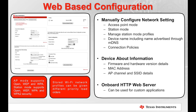From the Devices tab, you can easily access the onboard HTTP web server. This will enable access to configure the network settings, and you have many options available to set things up exactly how you desire. You can also find out device details such as firmware and hardware versions, MAC address, etc. And of course, the onboard HTTP web server can be used to develop your own custom applications.